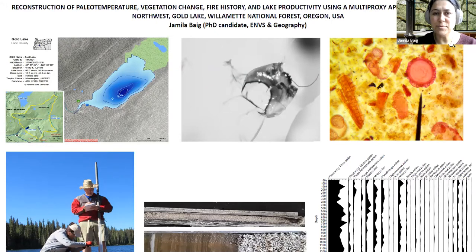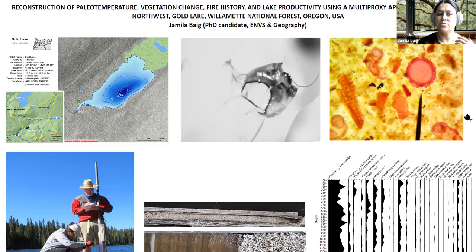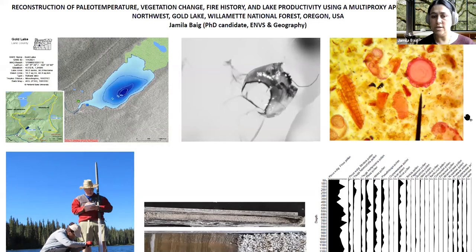Good afternoon, everyone. I'm Jamila, PhD candidate in Environmental Sciences and Geography. The impact of climate change — especially temperature — plays a critical role in shaping vegetation, fire history, and lake productivity. I'm working on Gold Lake, one of the most productive lakes in the Pacific Northwest, to reconstruct temperature change, vegetational patterns, and lake productivity for the last 15,000 years. To answer my questions, I'm using lake sediments because they help interpret past environmental conditions based on information stored in the sediment profile.